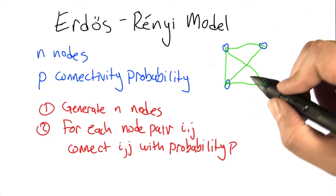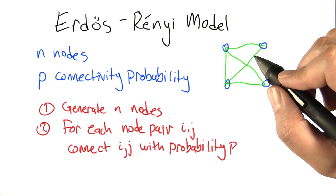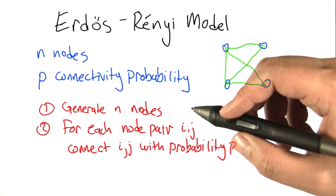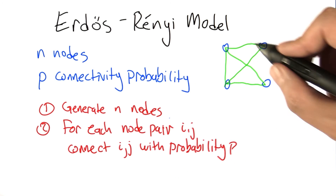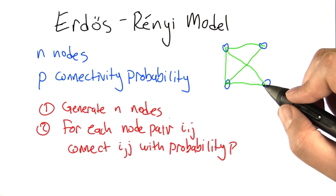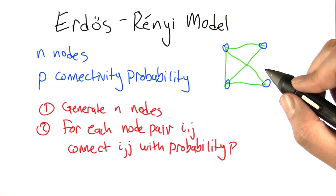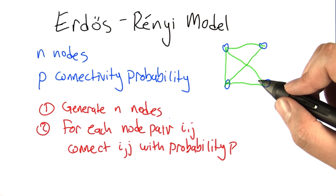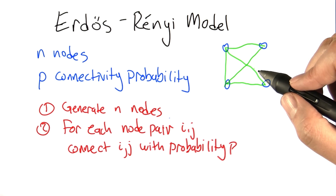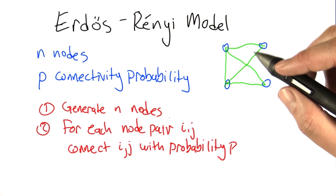There are lots of interesting mathematical properties you can derive given the simplicity of this generation process. For example, you can ask: what should the probability p be so that the graph is very likely to be connected, with no disconnected nodes floating off, or that there are relatively short paths from one node to the next? This has been fairly well studied. Researchers have found, however, that these kinds of randomly generated graphs don't seem to match very well the kinds of social network graphs you see in practice in the real world.